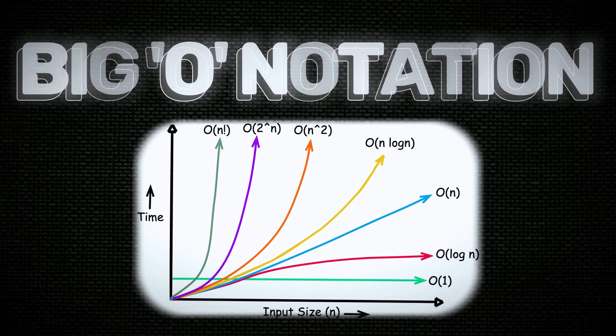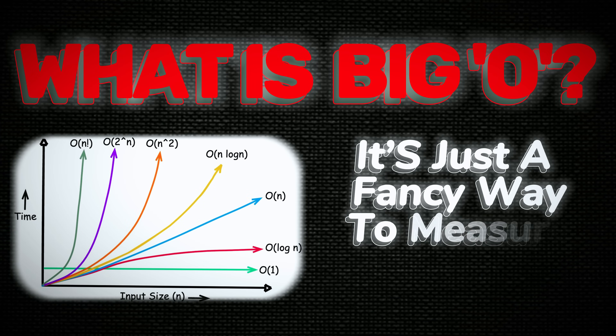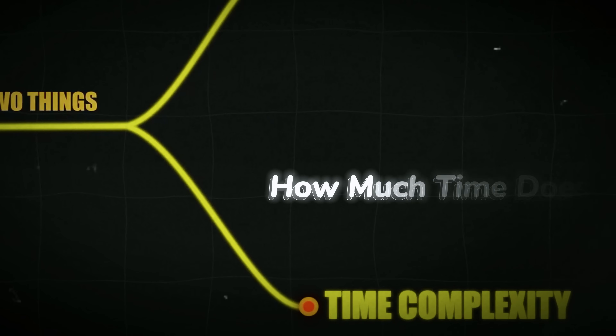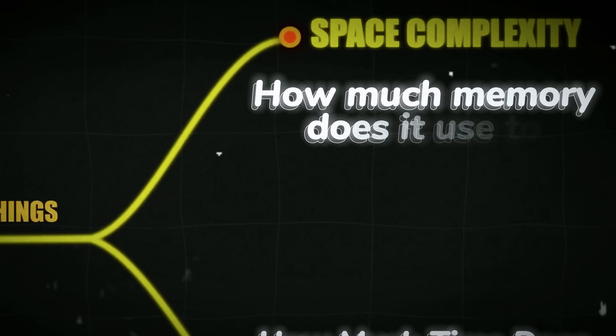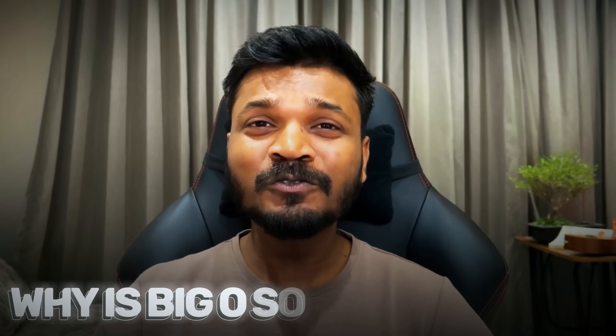Big O Notation. It sounds scary and the name sounds like a villain from Avengers, but trust me, it will be your best friend in DSA interviews. So what is Big O? It's just a fancy way to measure performance. Big O tells you two things: how much time does your code take to run as the input grows, and how much memory does it use to complete the task?